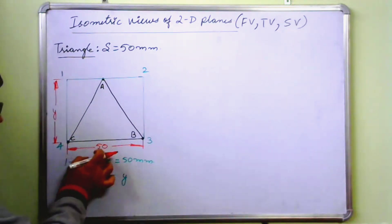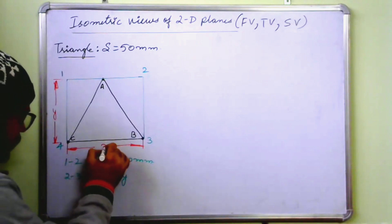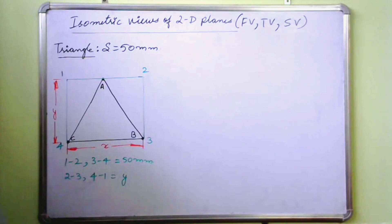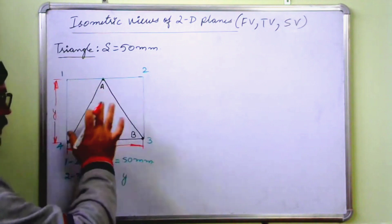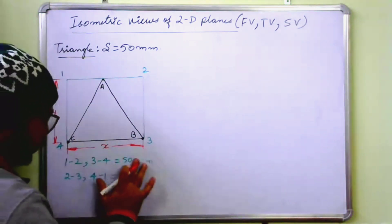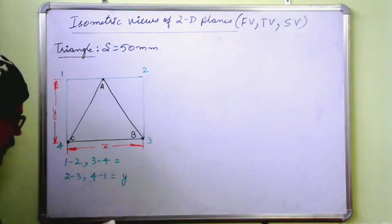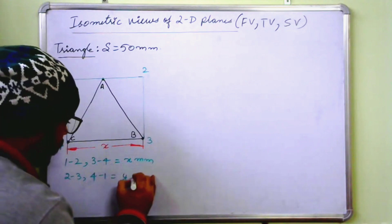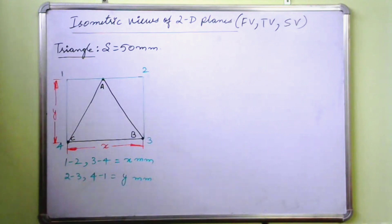And in general, now it is 50, but let us say this is x. Because in triangle we are able to draw this, but in case of a pentagon or a hexagon, we will not be able to get how much is this. So you will have to draw this and then you will be able to get. So in general, I am just writing, let us say this is x mm and y mm.